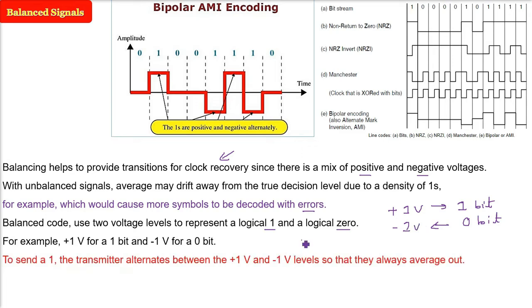In order to send a 1, for example, the transmitter will alternate between the positive value and negative value voltage levels, so that because of the balancing, they always average out.